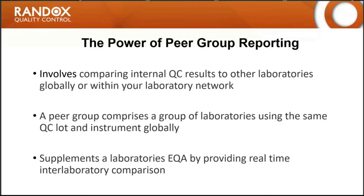Why peer group reporting, and why can it greatly benefit your lab? A peer group comprises any group of laboratories using the same QC lot but also, most importantly, the same instrument and same method — so we're comparing like for like. It involves comparing your internal QC results with those of other laboratories, either globally or within your organization or laboratory network. Both are possible with peer group reporting packages, and finally it will supplement your EQA by providing a real-time inter-laboratory comparison. Most EQA programs operate on a monthly or bi-weekly basis, but with data management packages you can every day, in real time, look at how you compare to other laboratories using the same QC, same instrument, and same method.